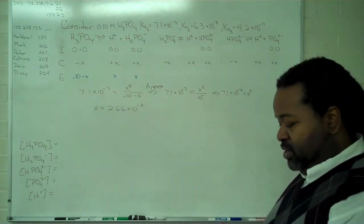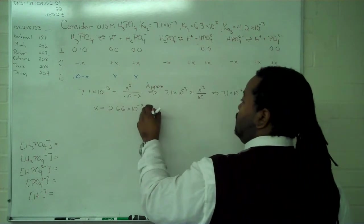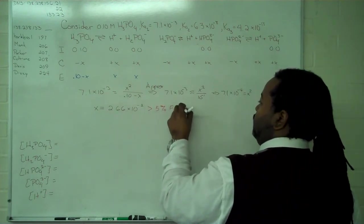Now, we compare this against the original amount. And what we'll find is that this is greater than 5%. So our approximation fails.